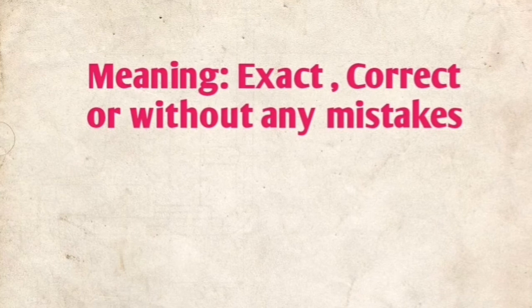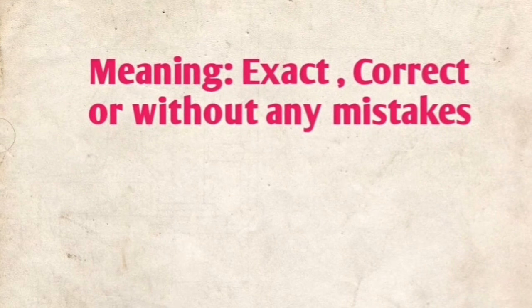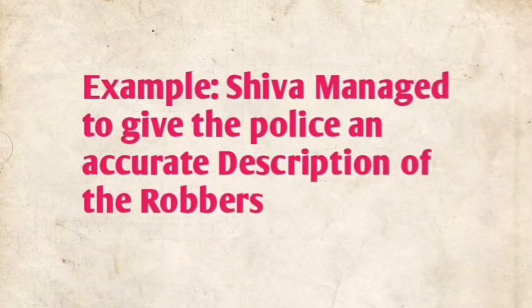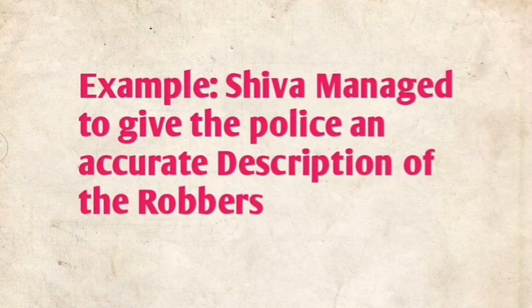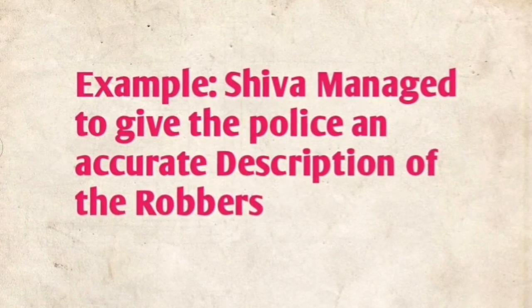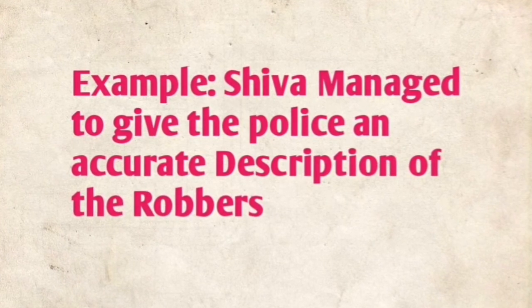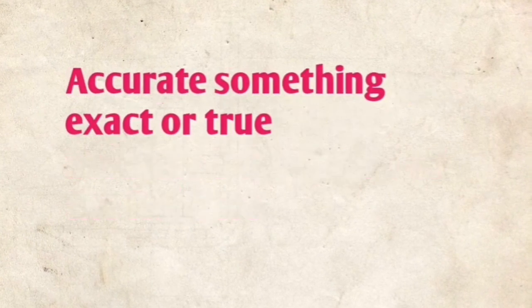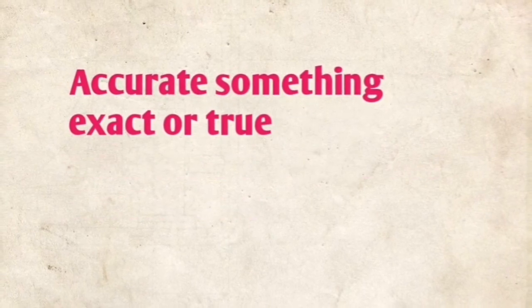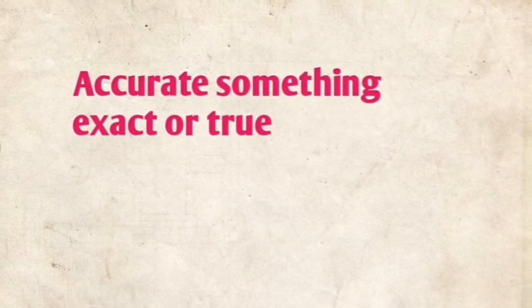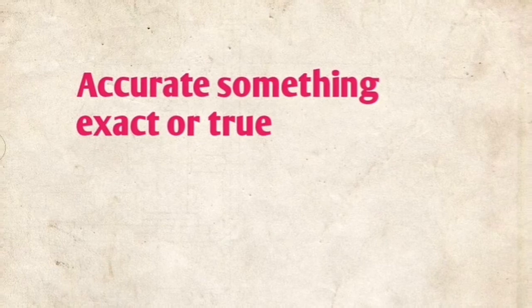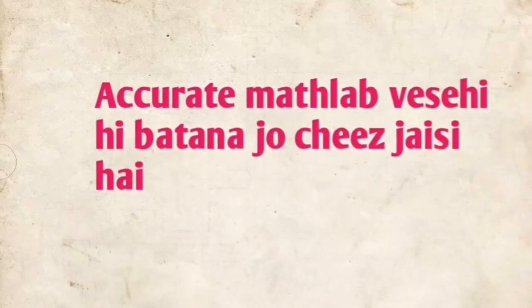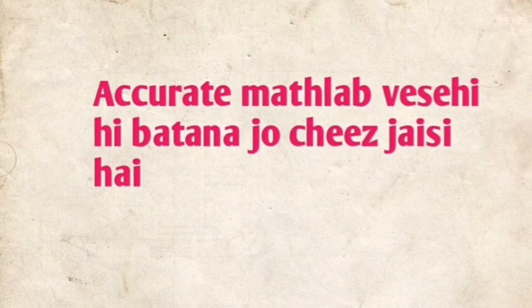Accurate means very exact, correct, or without any mistakes. For example: 'Shiva managed to give the police an accurate description of the robbers' — which means very clear and very true, explaining something exactly as it is. So accurate means something very exact that you are defining or describing.